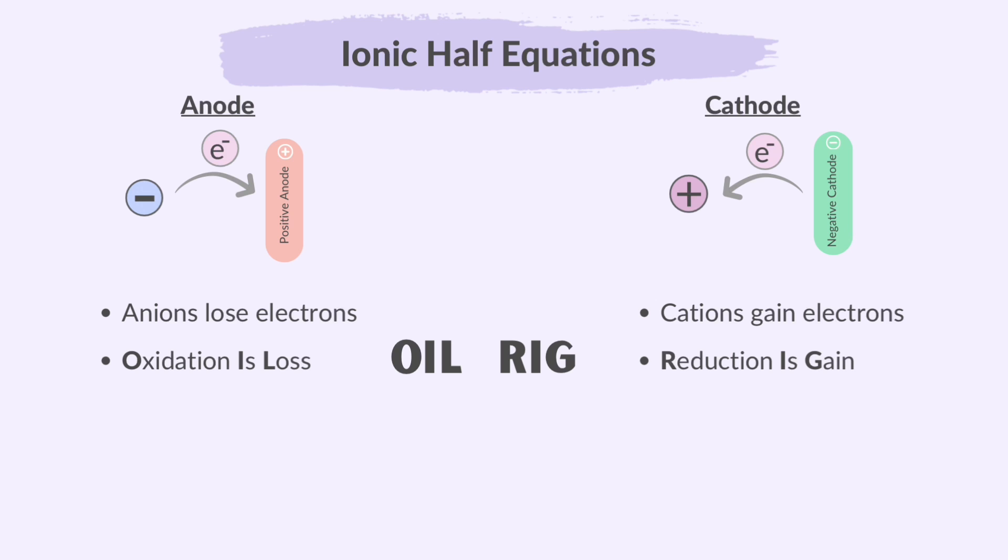For example, for the electrolysis of molten sodium chloride, these will be the ionic half equations. At the anode, two chloride ions lose two electrons to form Cl2 gas. So, it's rearranged to be written like this.